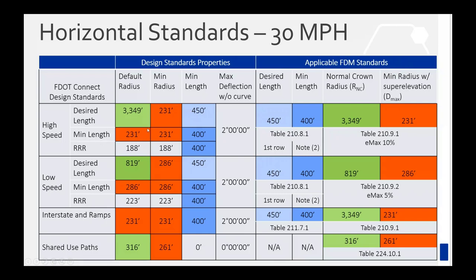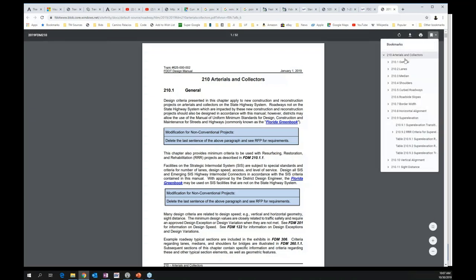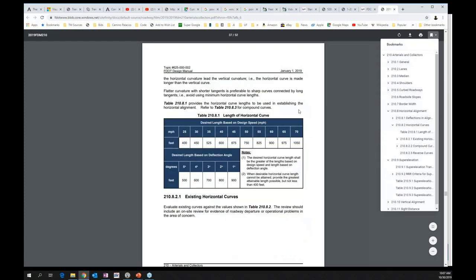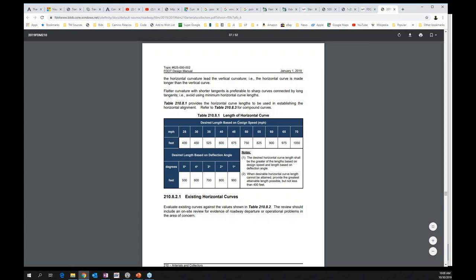The minimum length refers to the minimum length from the FDM table, while the desired length is based on the speed table — specifically table 210.8.1, the length of horizontal curve. There's also a desired length based on deflection angle, but ORD cannot currently calculate that, so you'd have to check it yourself. This is a limitation of the software; SS4 wasn't able to do it either. They may add that feature at some point.